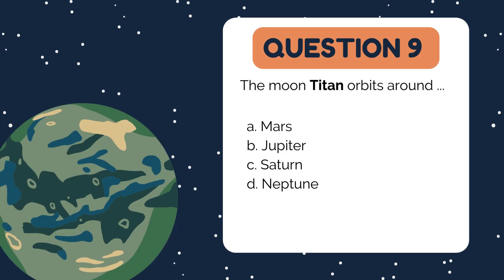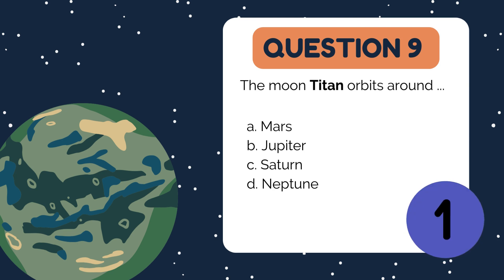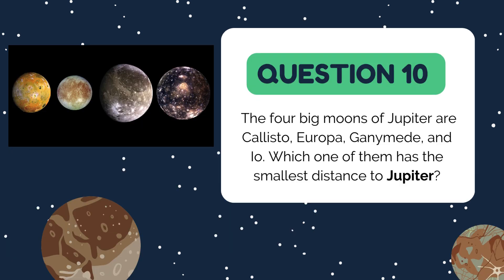Here's one about one of the most fascinating moons in the Solar System. The Moon Titan orbits around: A. Mars, B. Jupiter, C. Saturn, D. Neptune. The answer is C. Saturn. Titan is Saturn's largest moon and the second largest in the Solar System after Jupiter's moon Ganymede. It's famous for its thick atmosphere and surface lakes of liquid methane — an incredible alien world.